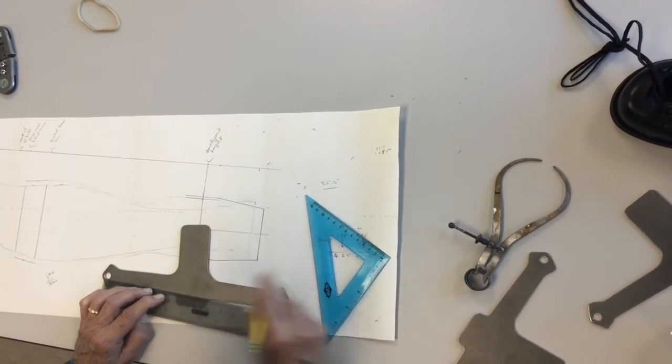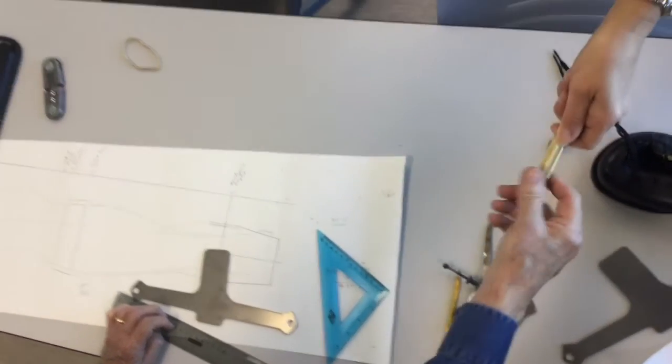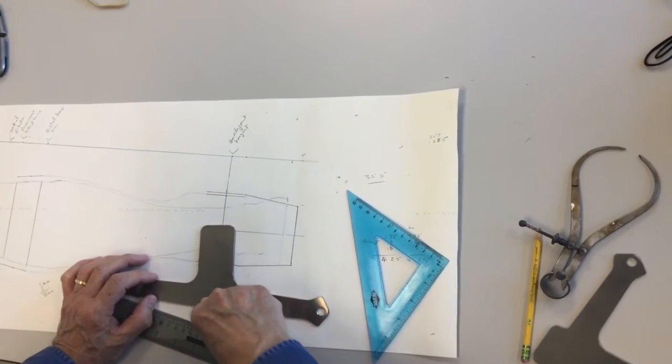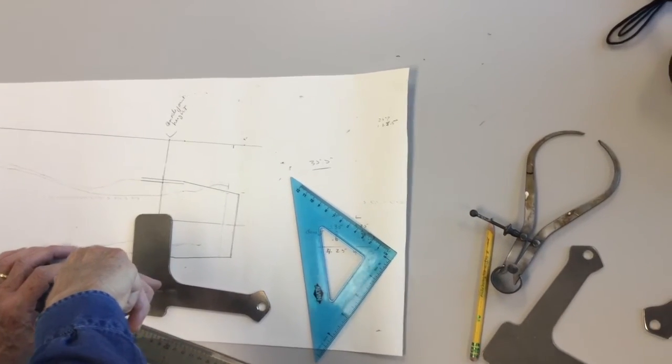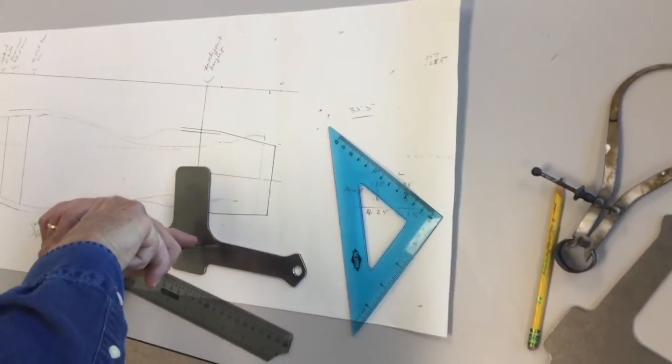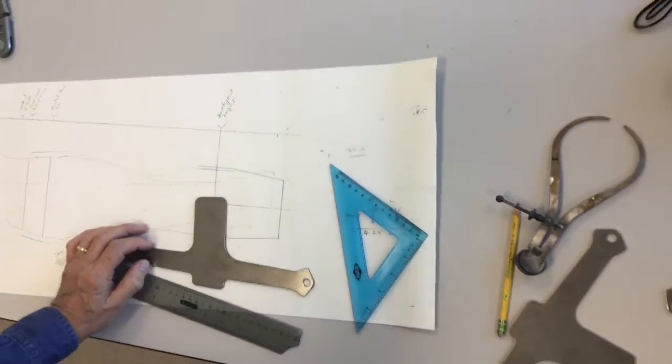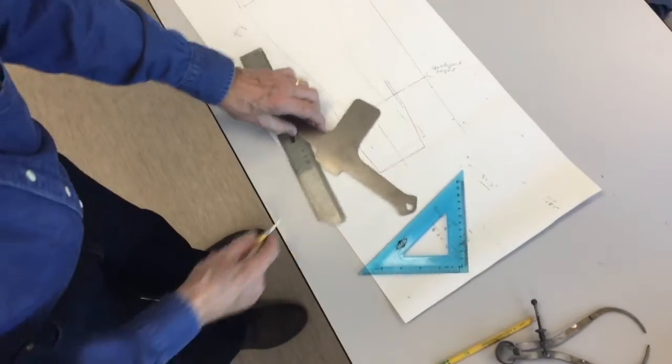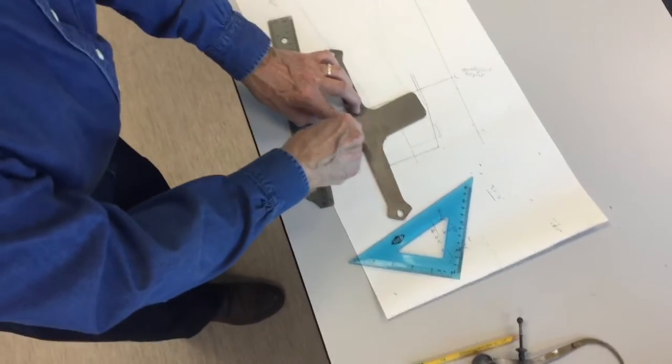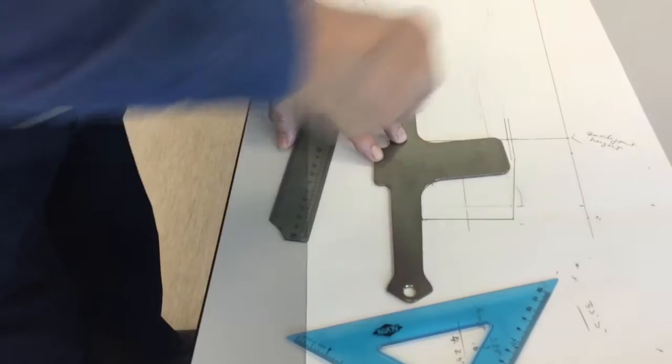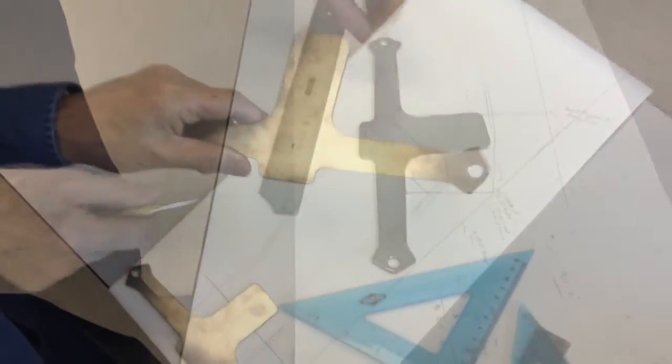At that point, you want to take your handy automatic center punch and center punch it. You may want to do this more than once. Or you may want to take a manual one and reinforce it just to make it a little bit deeper.